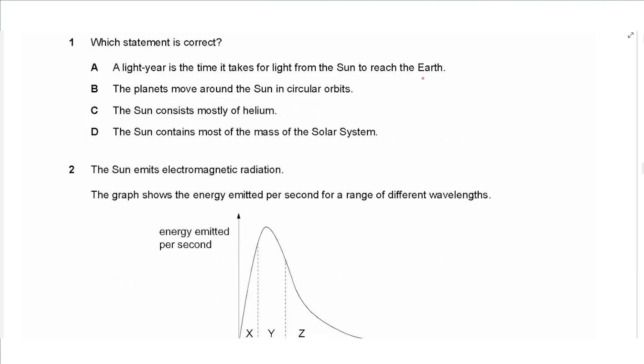Another question says, which statement is correct? A light year is the time it takes for light from the sun to reach the Earth. No, it's not time, it is the distance traveled by light in one year. The planets move around the sun in circular orbit. No, it is not circular, it's elliptical. The sun consists mostly of helium. No, right now it is mainly hydrogen, because it's a stable star at this stage. The sun contains most of the mass of the solar system. This statement is correct, so the answer is D.